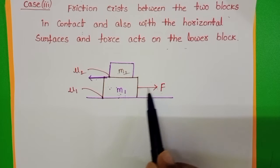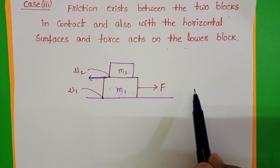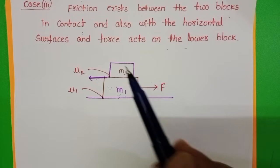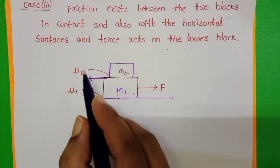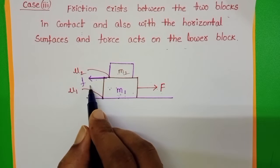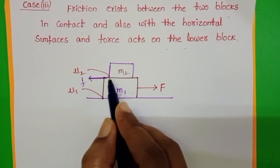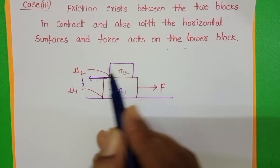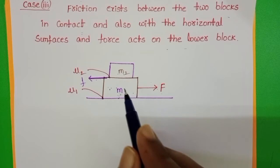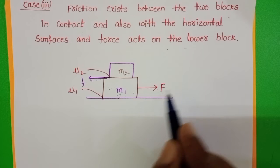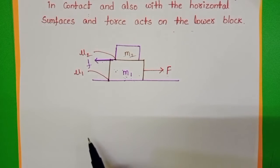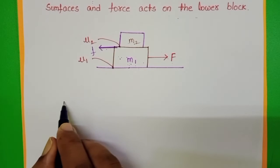Due to this force, m1 accelerates in the forward direction. Whenever m1 is moving in the forward direction, frictional force acts in the opposite direction. Due to this frictional force, it exerts a pseudo force on m2, so m1 and m2 are relatively moving in the forward direction. To understand this, first draw the free body diagrams in terms of m1 and m2.